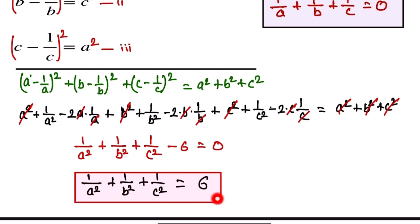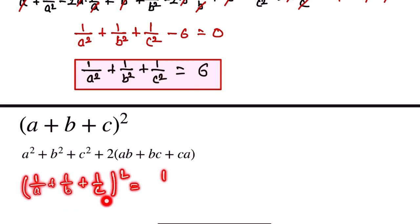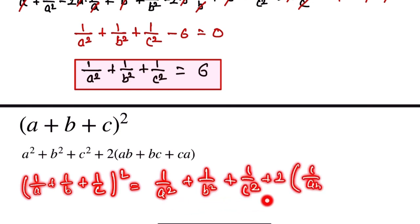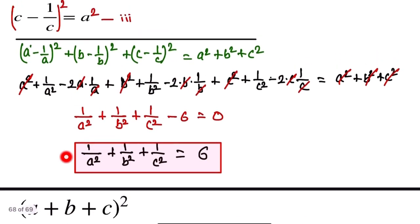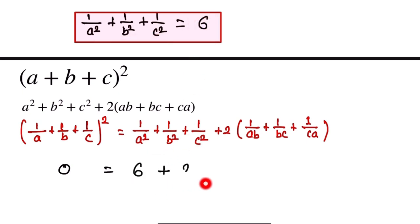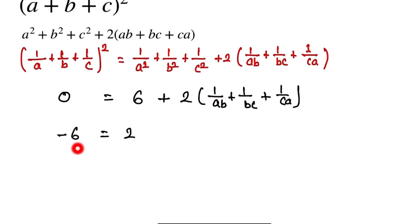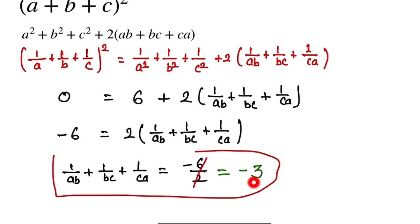Now we use the identity (1 by A plus 1 by B plus 1 by C)² equals 1 by A² plus 1 by B² plus 1 by C² plus 2 times (1 by AB plus 1 by BC plus 1 by CA). We substitute: the left side equals 0² which is 0, and 1 by A² plus 1 by B² plus 1 by C² equals 6. So 0 equals 6 plus 2 times (1 by AB plus 1 by BC plus 1 by CA). Therefore 1 by AB plus 1 by BC plus 1 by CA equals minus 6 by 2, which equals minus 3. This is our final answer.